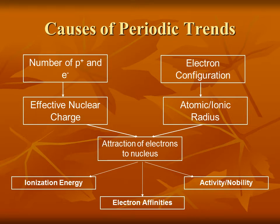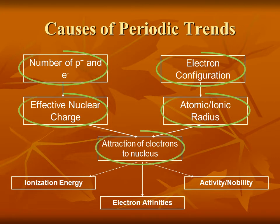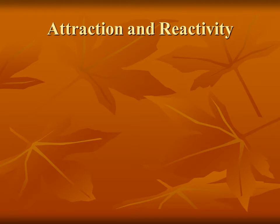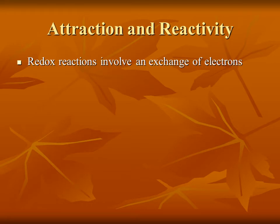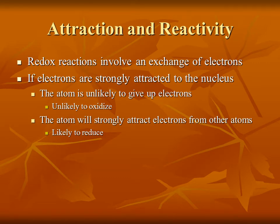In part one of this presentation, we're going to be focusing on the top three rows of this diagram. Let's talk about attraction and how that affects reactivity. Redox reactions — those are reduction-oxidation reactions — involve an exchange of electrons. One element gains electrons, the other element loses electrons. If electrons are strongly attracted to the nucleus, then the atom is unlikely to give up electrons — in other words, it is unlikely to oxidize.